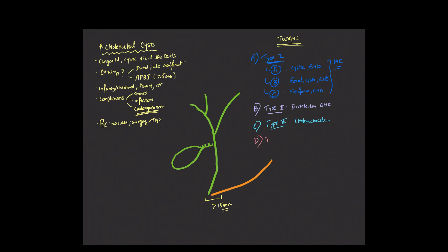Move on to type 4 choledocal cysts, of which there are two subcategories that you need to know about. In both, you'll see multiple cysts. Type 4a, you're going to see multiple cysts that involve the intra- and extrahepatic bile ducts, as can be seen in this drawing over here.